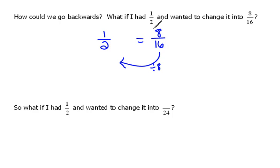So if I'm going to go the opposite direction, I need to do the opposite of dividing by 8, which would actually be to multiply by 8. So if I were to multiply 1 times 8, that would be 8, and if I were to multiply 2 times 8, that would be 16. So we could multiply top and bottom by the same number, and that does the opposite as dividing top and bottom by the same number.